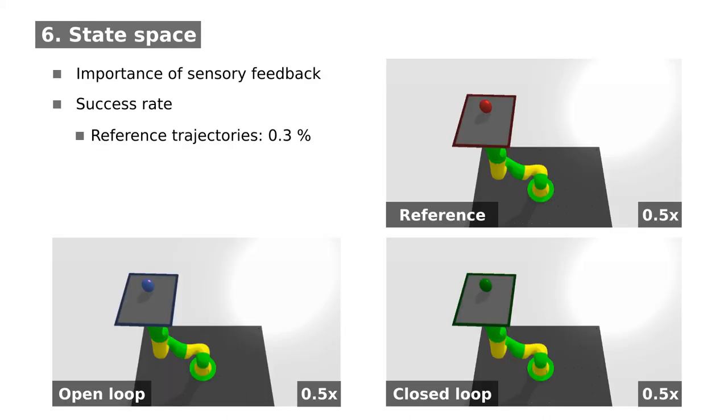This video focuses on the importance of sensory feedback. For that purpose, we analyze the success rate of our ball-on-plate task for different settings. A trajectory is considered as successful if the ball stays at its initial place.